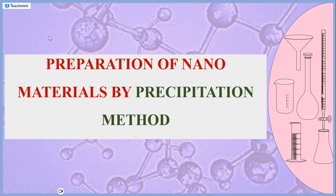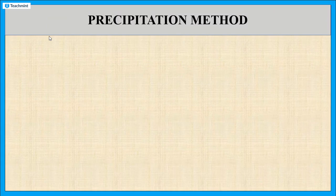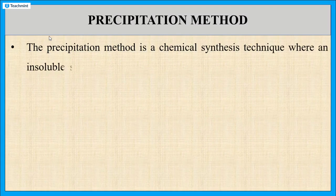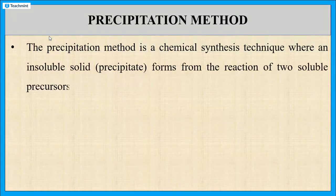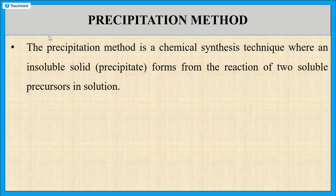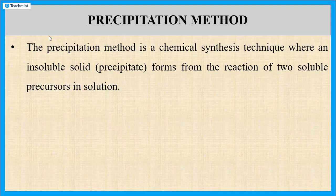First let us see what is precipitation method. This method is the chemical synthesis where two or more soluble precursors react in solutions so that they form an insoluble product in the form of precipitates. That insoluble product is our required nanoparticles. In this method, two or more soluble precursors react in solutions and the formation of nanoparticles takes place in the form of precipitate.